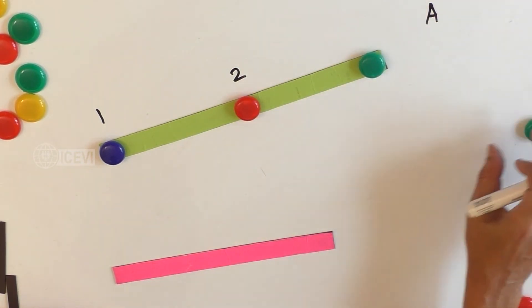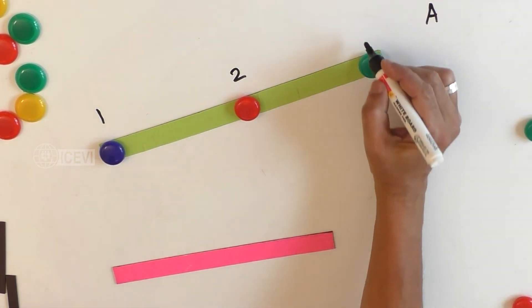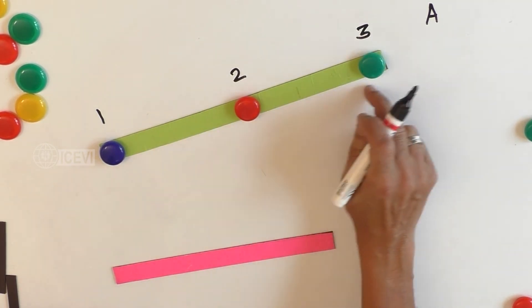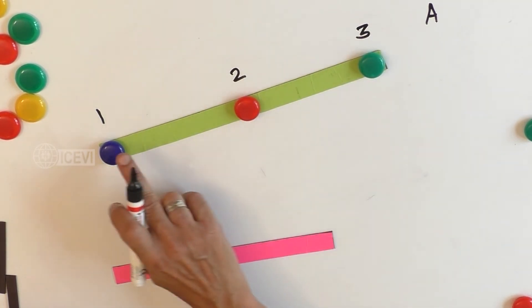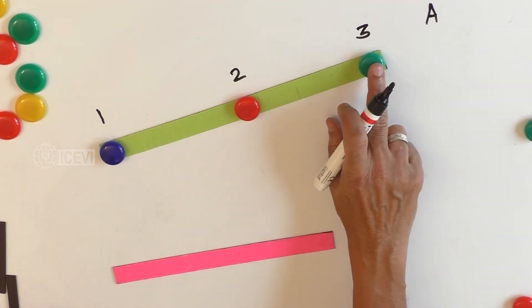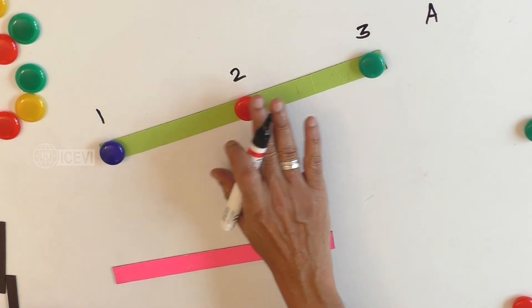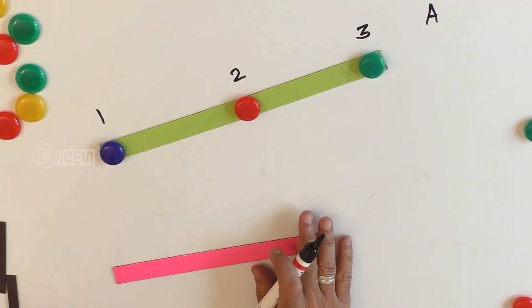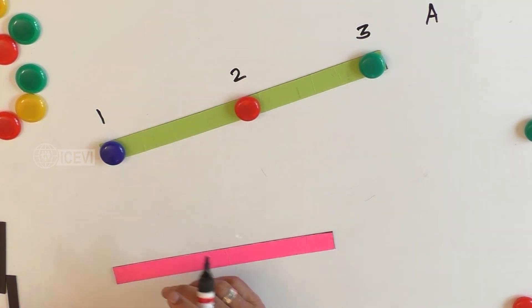In this example, there is a straight line A and there are 3 points. Points 1, 2, and 3 all are on the same line.